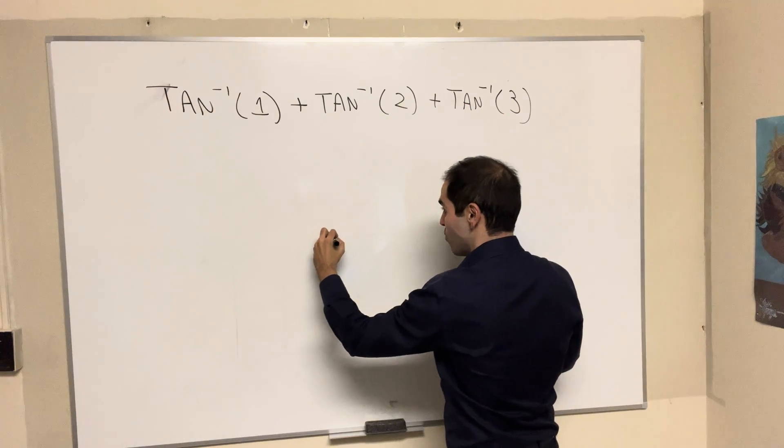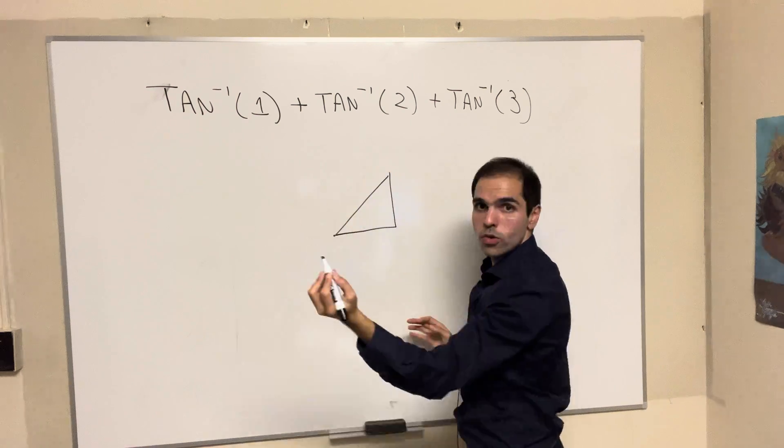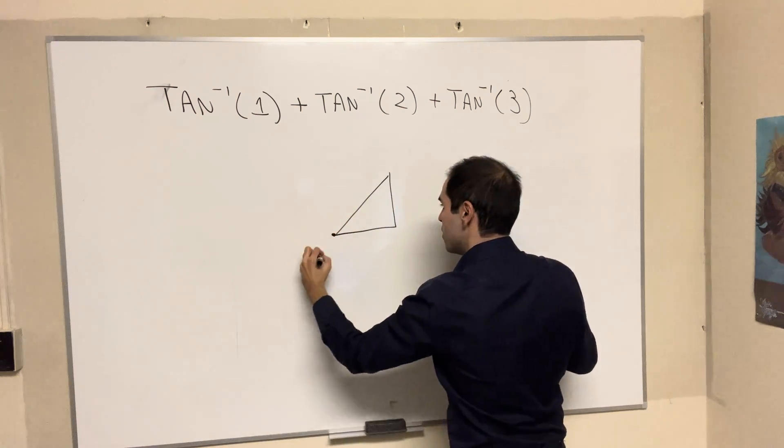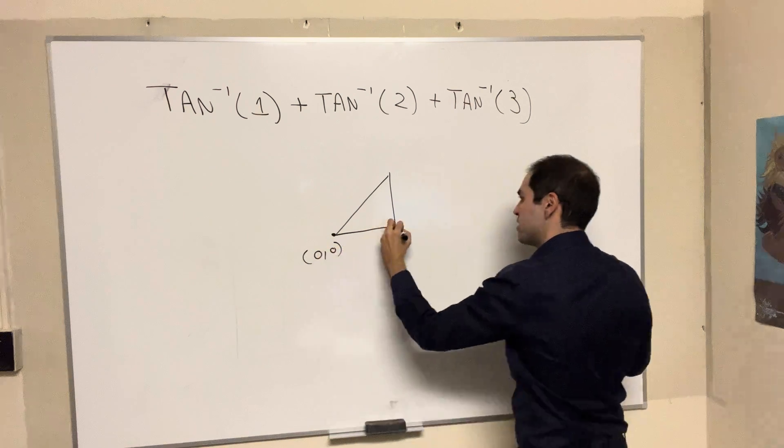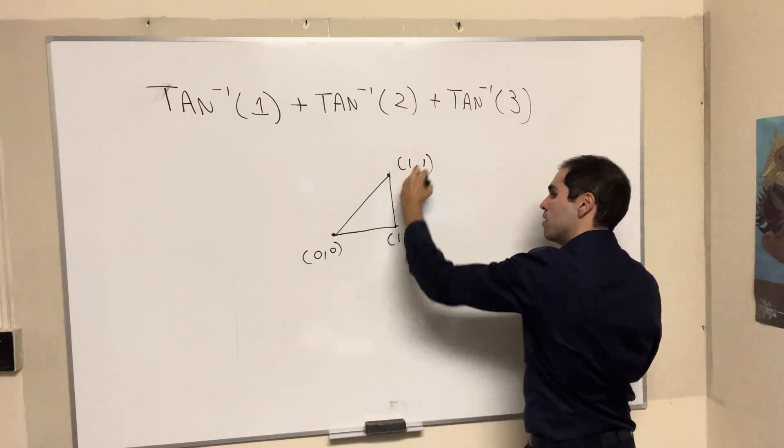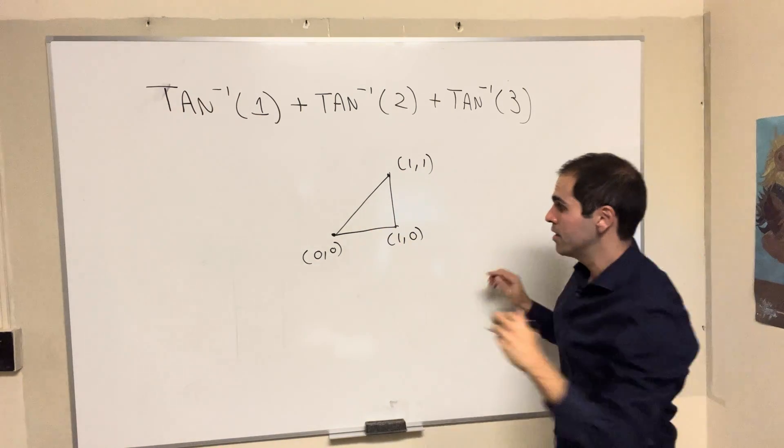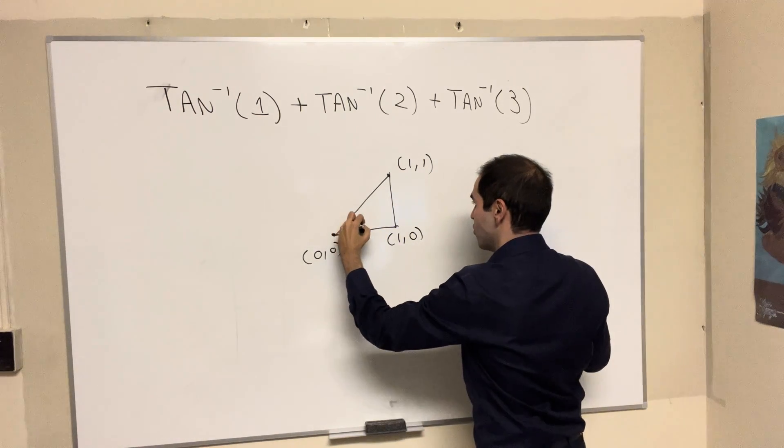Because arctangent of 1 should remind you of this triangle, 1, 1, square root of 2. So how about we start at (0,0), go 1 to the right, and then 1 up? Then indeed, this side is 1, this side is 1. So this angle is arctangent of 1.